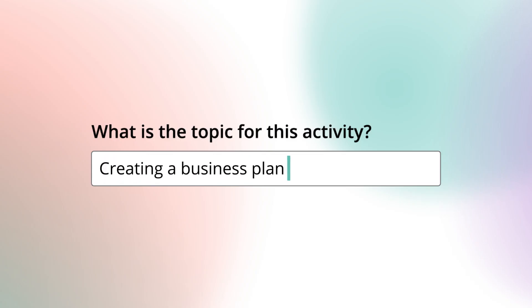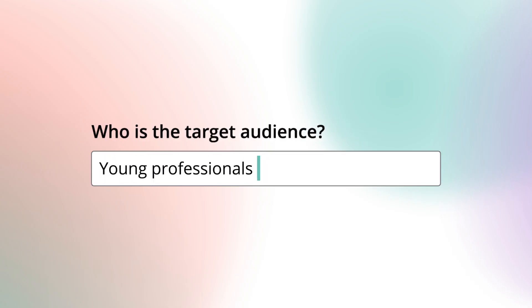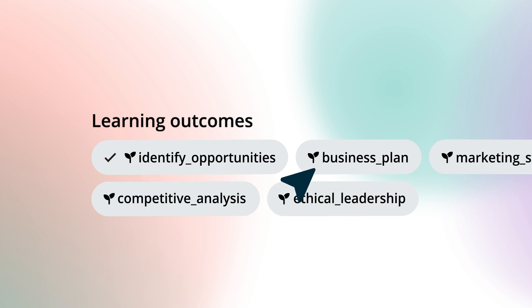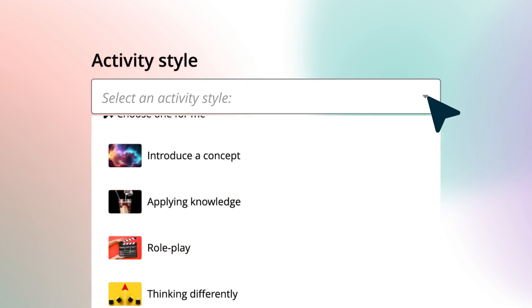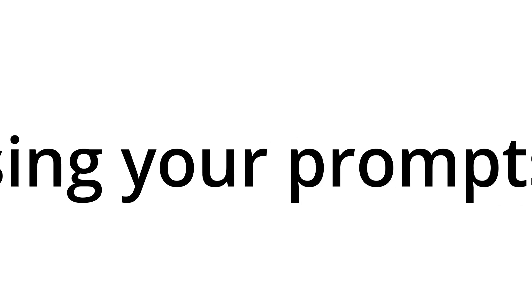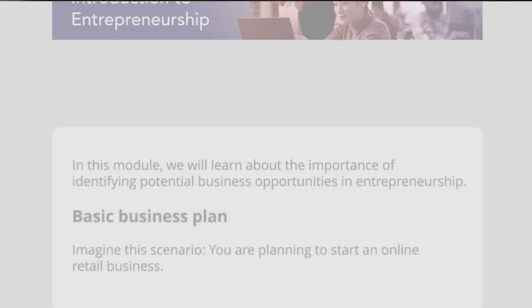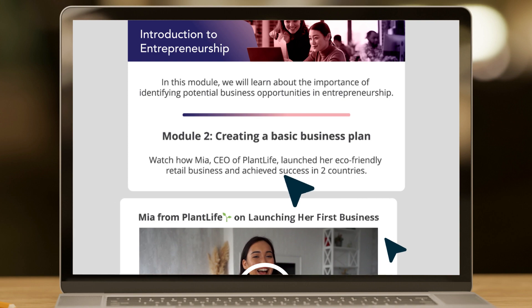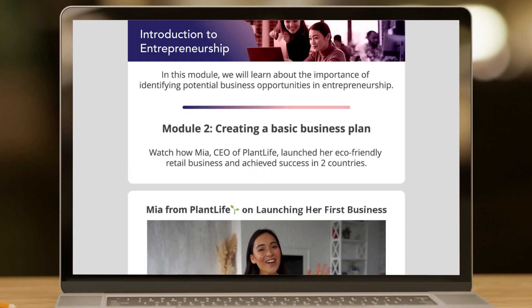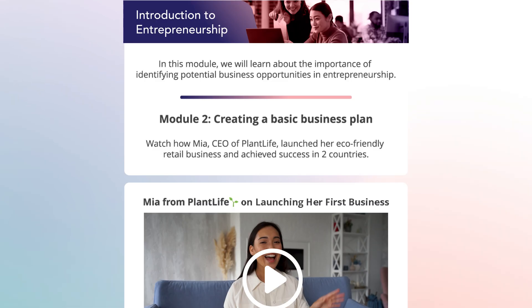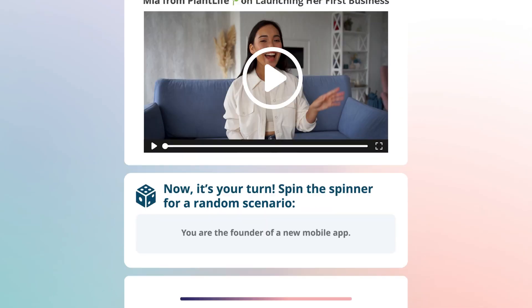Simply add your topic, audience, tone, learning outcomes, preferred activity style, and click Generate. And there you have it! Next, review and refine to fit your needs. Then, get back to what's important — your learners.